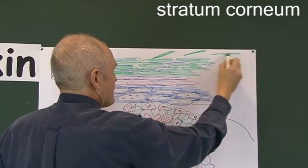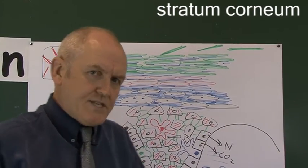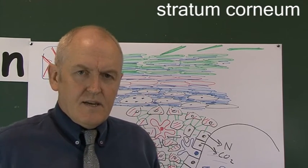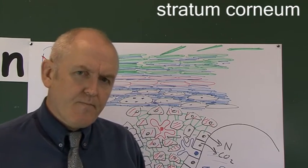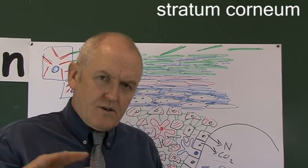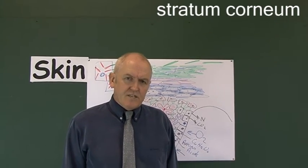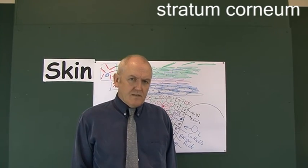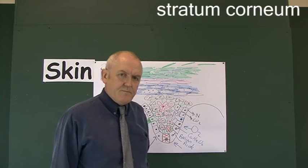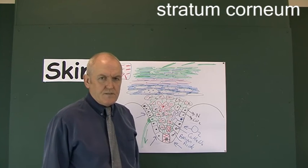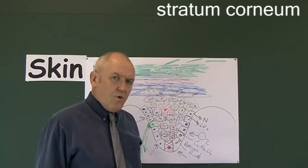The cells simply float away. Sometimes when you towel yourself after a bath you can see bits of white skin coming off the surface. If you run your finger along a mantelpiece, most of that dust is actually sloughed-off human skin cells — cells rich in keratin sloughed off the surface of the stratum corneum, the outer horny layer.